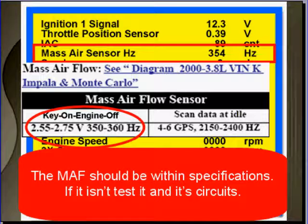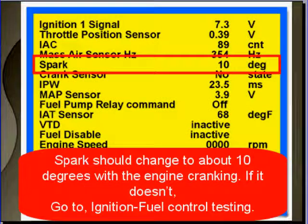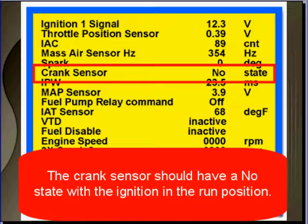The MAF sensor should be within specifications. If it isn't, test it and its circuits. Spark should be about zero degrees with the ignition in the run position, and then it should change to about 10 degrees with the engine cranking. If it doesn't, go to ignition fuel control testing.